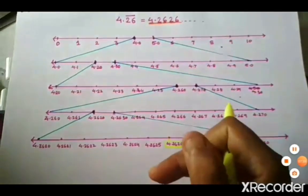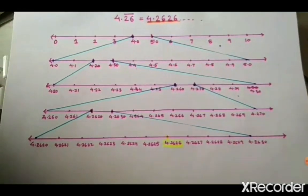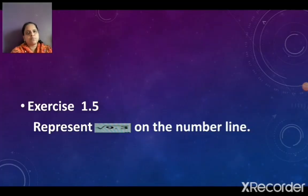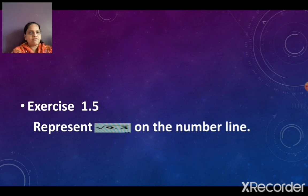If you want to continue further, just continue with the next number lines and you can show any decimal number on a number line. We have completed Exercise 1.4 and will continue with Exercise 1.5. In Exercise 1.5, I will start with representing the square root of 9.3 on a number line, since we have already seen how to represent an irrational number, but now a decimal number is given inside the square root.